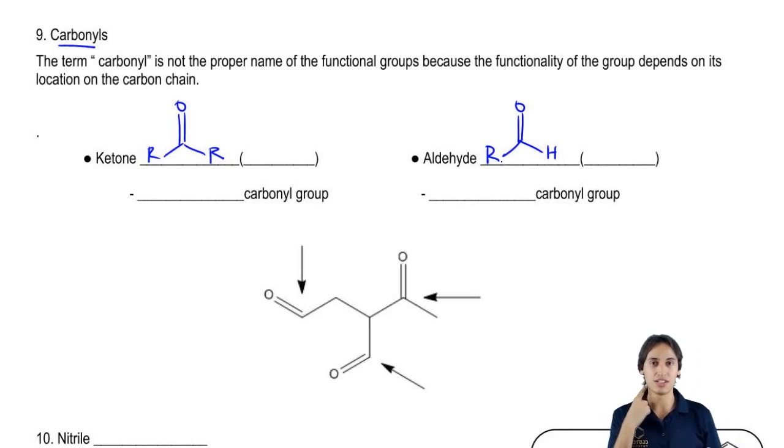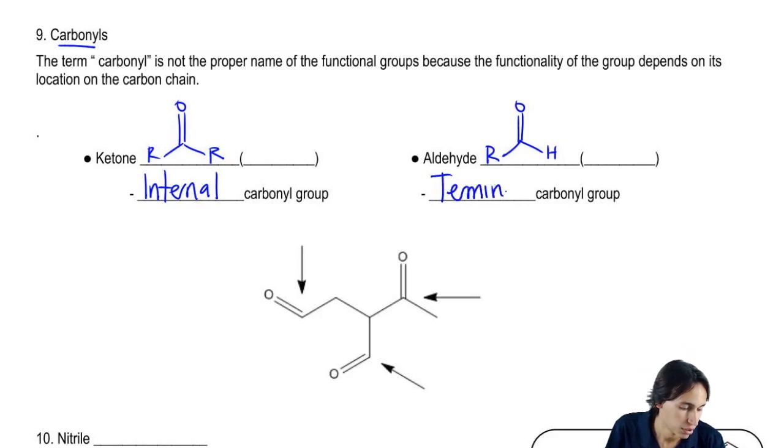But another way that I like to think about these is if you're looking at a structure like I have right here, just a really big structure. Another way that I like to think of it is that a ketone is an internal carbonyl group whereas an aldehyde is a terminal carbonyl group. Now what are these words internal and terminal? They're location words.